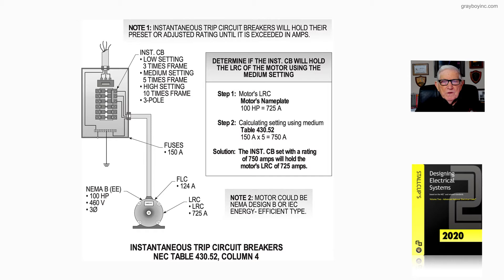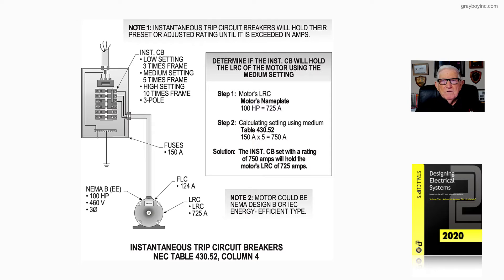This illustration deals with instantaneous trip circuit breakers. In the old days they came available in fixed settings: the low setting was three times the frame, so for a 150-amp frame that would be 450 amps. The medium setting was five times the frame — five times 150 equals 750 amps. The highest fixed setting was ten times the frame, so ten times 150.